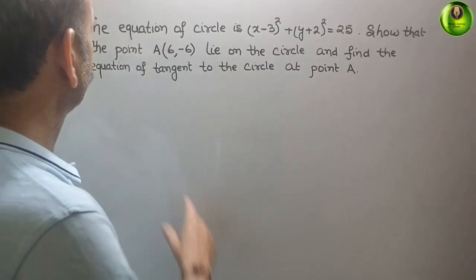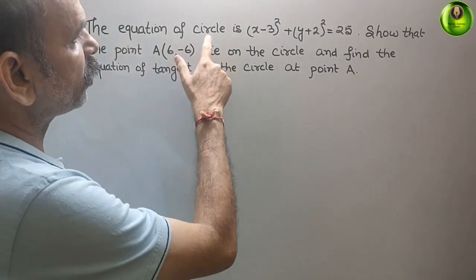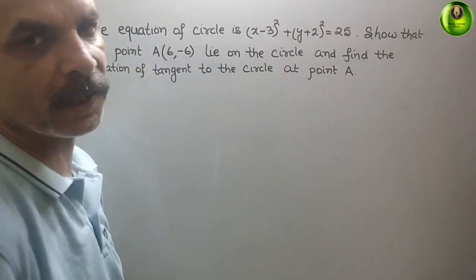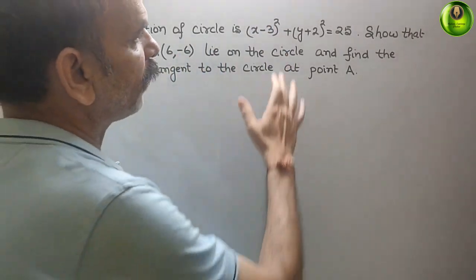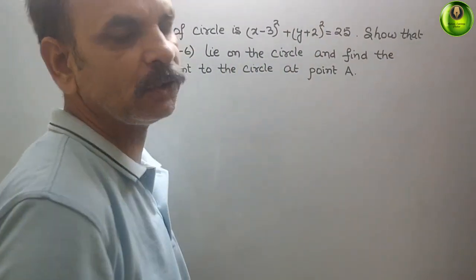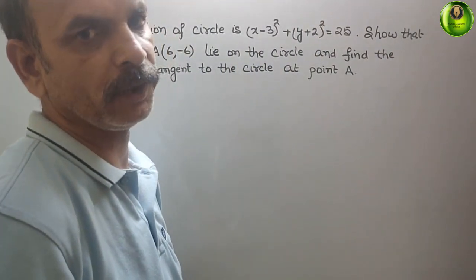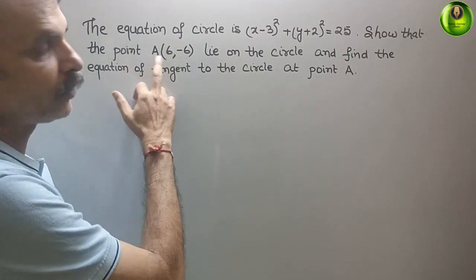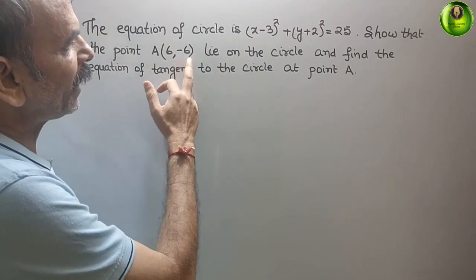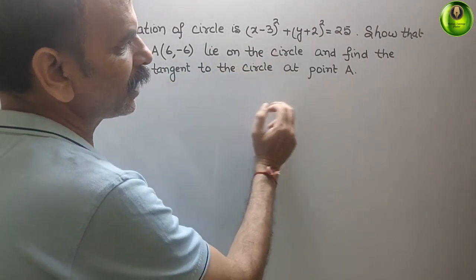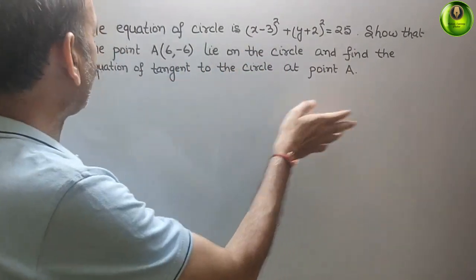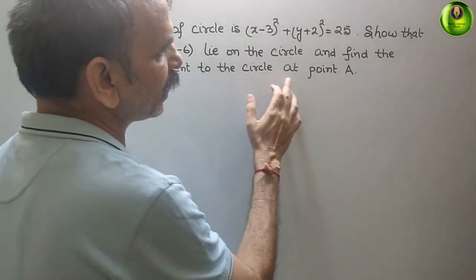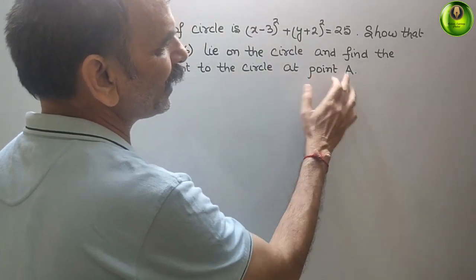Your question is: the equation of a circle is (x-3)² + (y+2)² = 25. Show that the point A(6, -6) lies on the circle and find the equation of the tangent to the circle at point A.